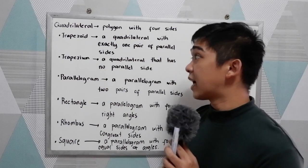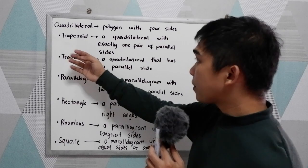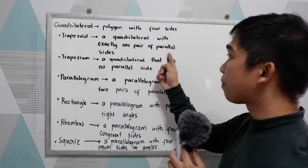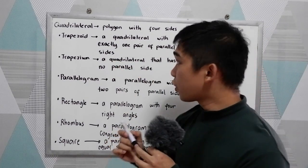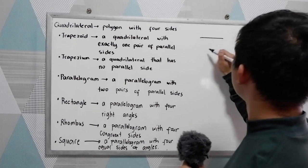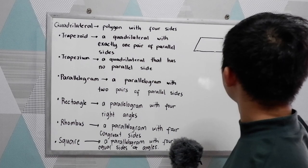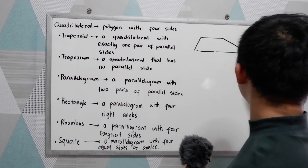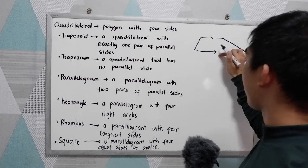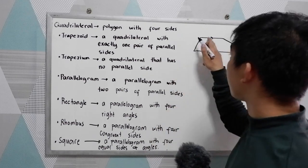We have different kinds of quadrilateral. We have first the trapezoid. A trapezoid is a quadrilateral with exactly one pair of parallel sides. So if we're going to draw a trapezoid, it can be like this one. So this side is parallel to this one. They are a pair, but not necessarily equal — they are just parallel.